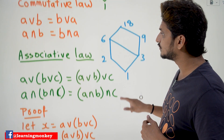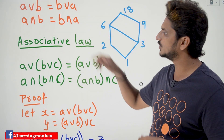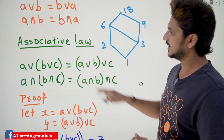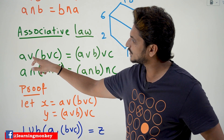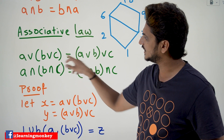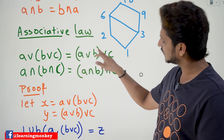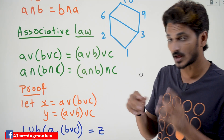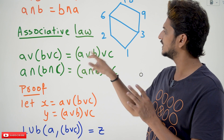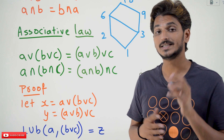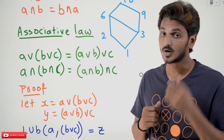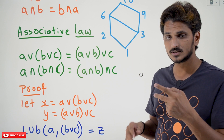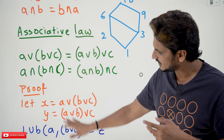Now coming to the third one — this is very important and a bit confusing to understand — the associative law. What this law says is: A least upper bound with (B least upper bound C) equals (A least upper bound B) least upper bound C. Means if you write the brackets anywhere — A least upper bound B, or B least upper bound C — wherever you write the brackets, you are going to get the same value. Now let's understand the proof. Before going into the proof, we will state two key statements. If you understand those two statements, it is very, very easy to understand the proof.